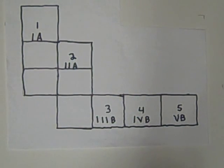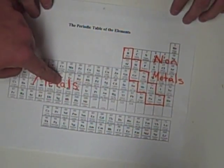The periodic table is broken into three main categories. Reading from left to right, we have metals, metalloids, and non-metals.